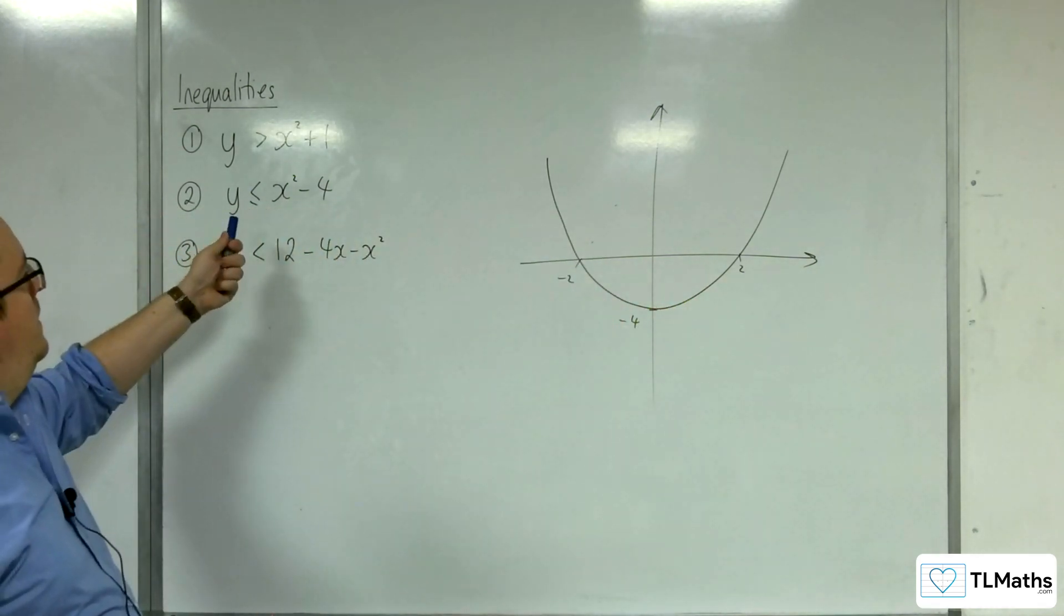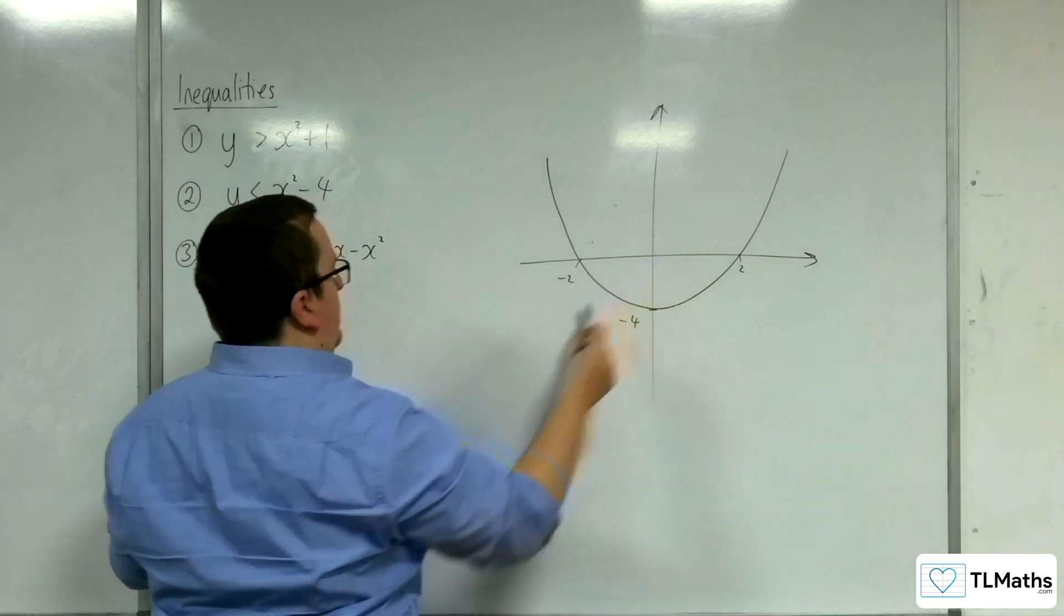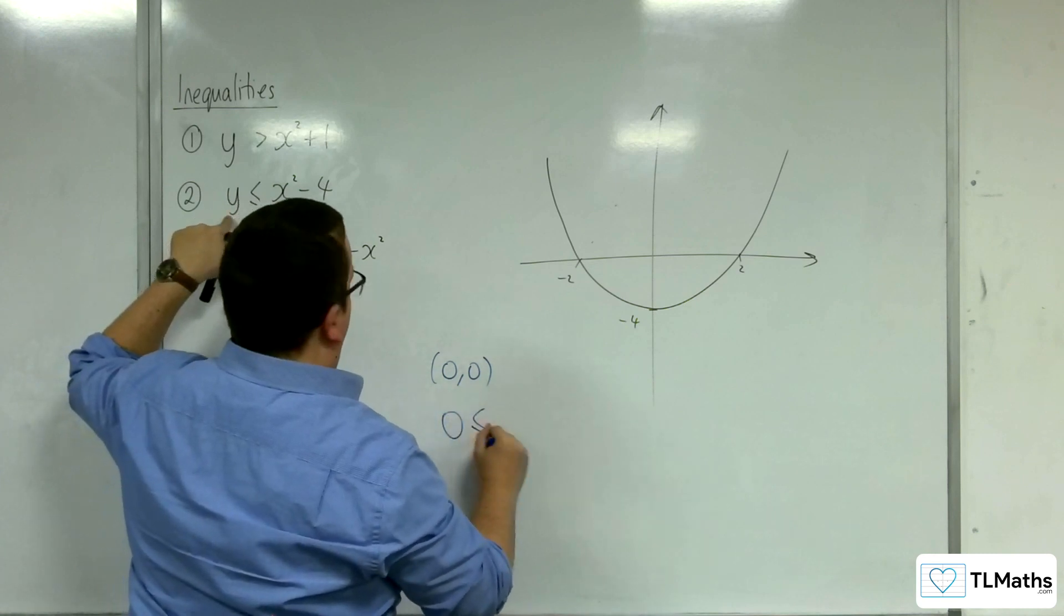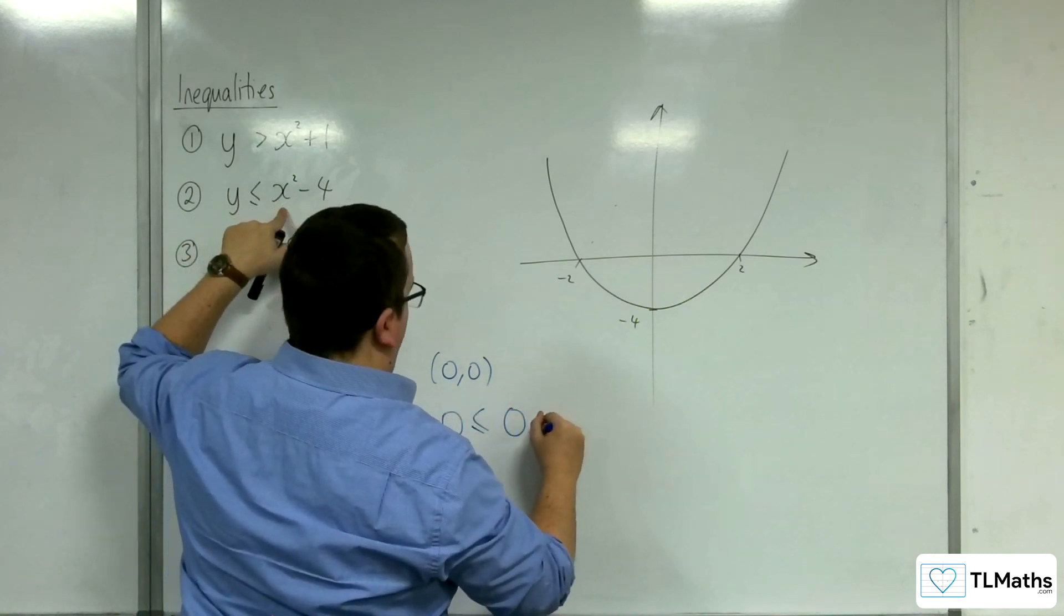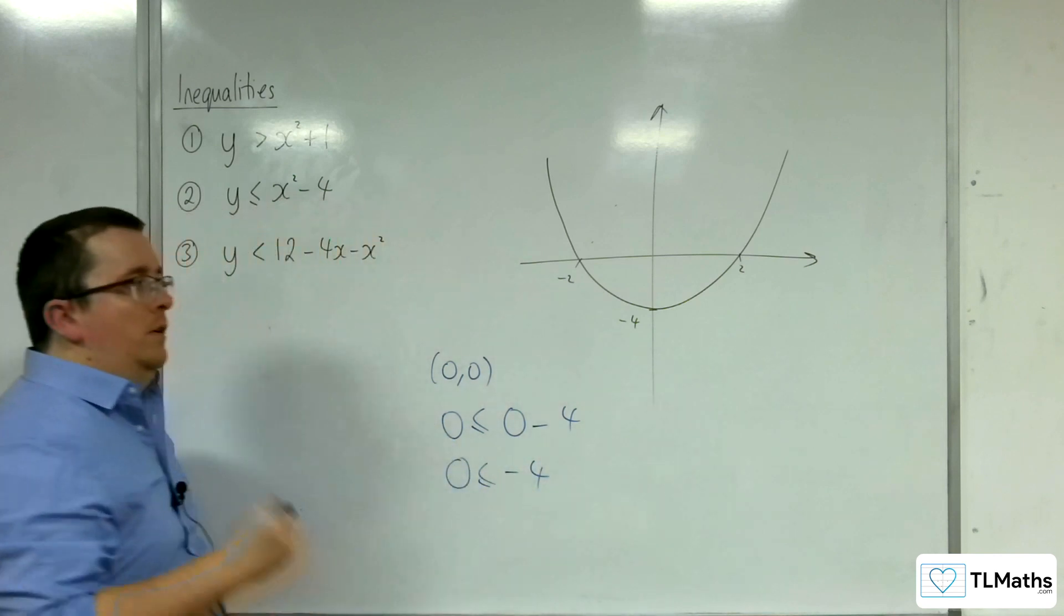So, we're going to choose a point then. So, let's try zero, zero. So, we get zero is less than or equal to zero squared take away four. Now, is zero less than or equal to minus four? No, it's not.